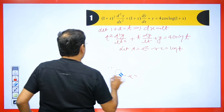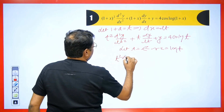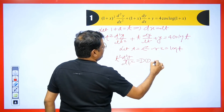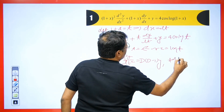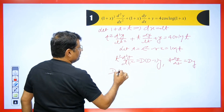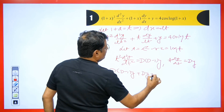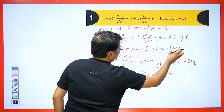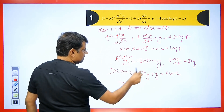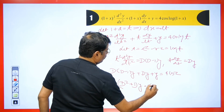The value of t² d²y/dt² is d(d-1)y, and t dy/dt equals dy. We put this value in, so it becomes d(d-1)y + dy + y = 4 cos(z). We simplify: d² minus d plus d cancels out, giving (d² + 1)y = 4 cos z. We replace d with m, which implies m = ±i.